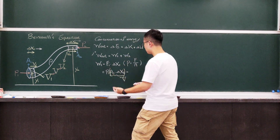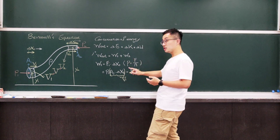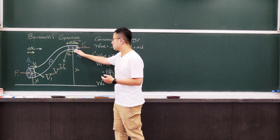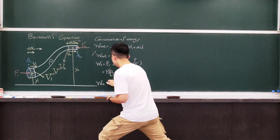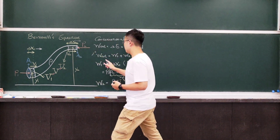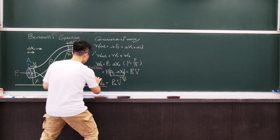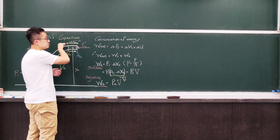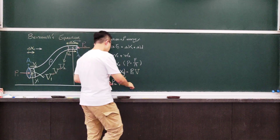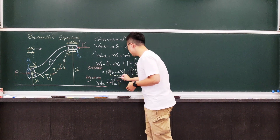Now I can keep rearranging, giving P1 times the volume. Similarly, the work done by F2 caused by pressure P2 can be expressed as P2 times the volume. W1 is positive work and W2 is negative — since the force points left and the displacement points right, they are 180 degrees opposite. So you put a minus in front of P2V, giving total external work as P1V minus P2V.